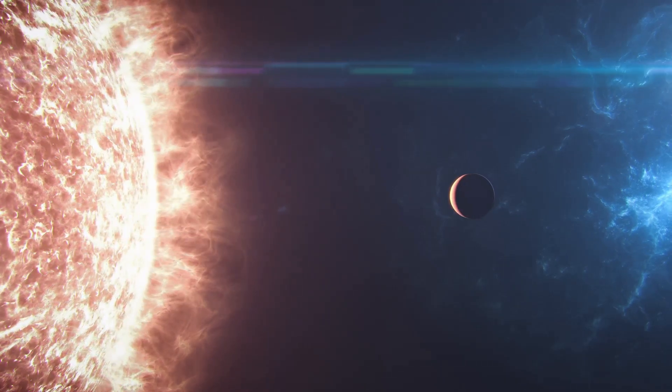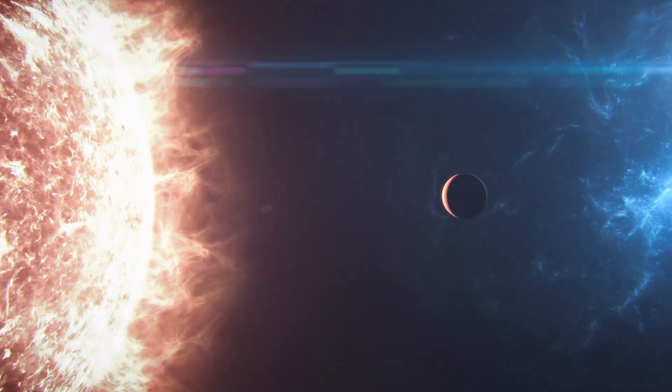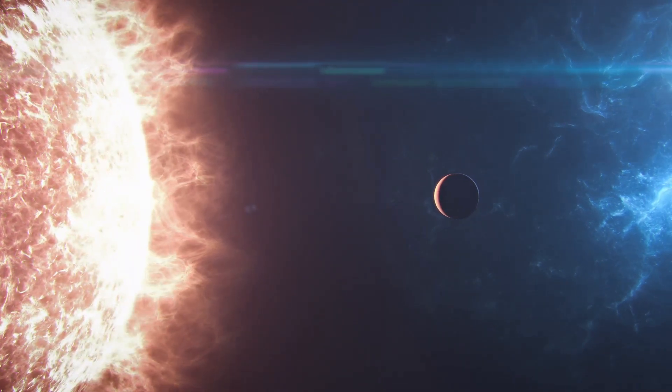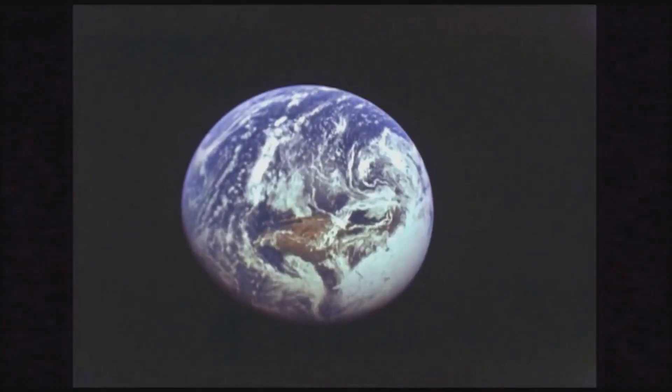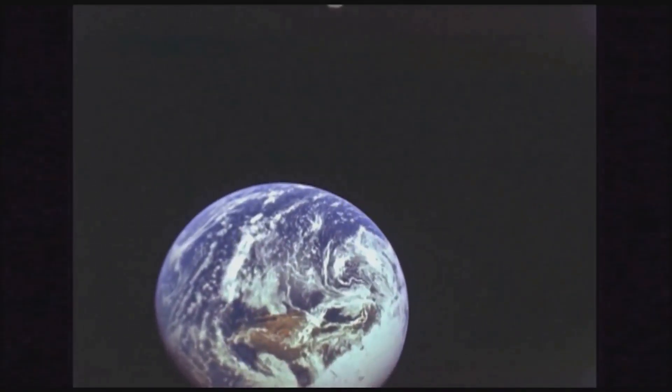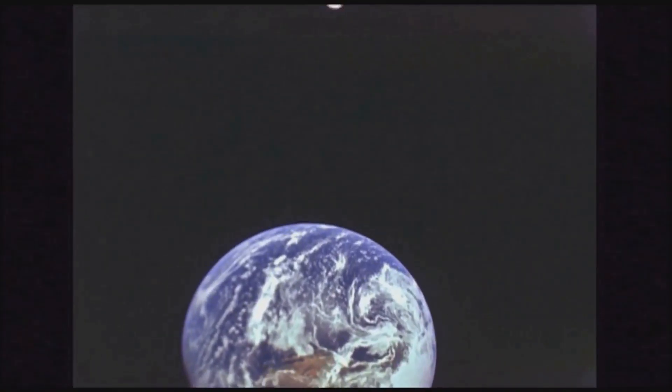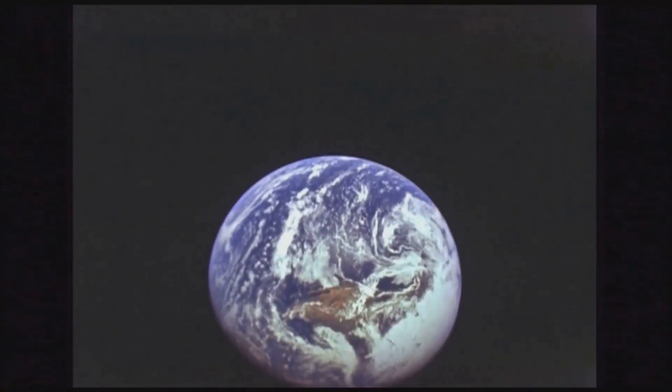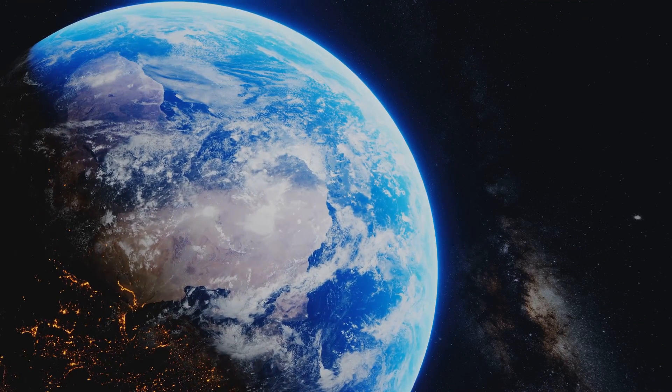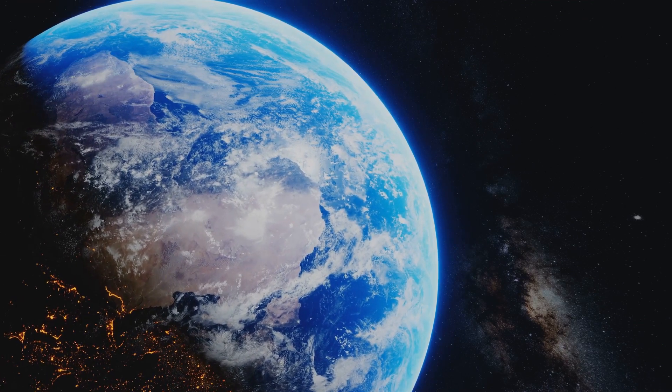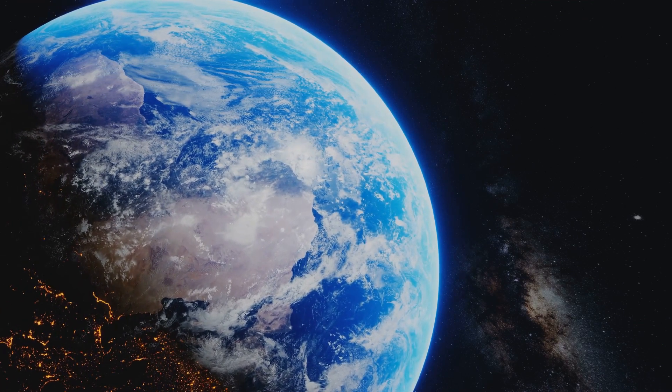But what makes this exoplanet so special, you might ask? Well, let's delve into the uniqueness of Alpha Centauri's exoplanet. To start with, its proximity to Earth is a big deal. It's located in the nearest star system to our own, just over four light-years away. That's like a cosmic stone's throw. In astronomical terms, it's practically our next-door neighbor.